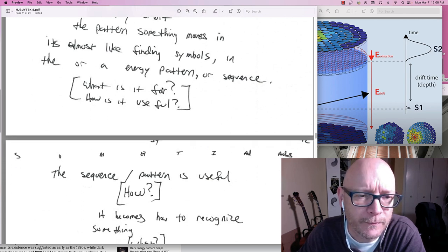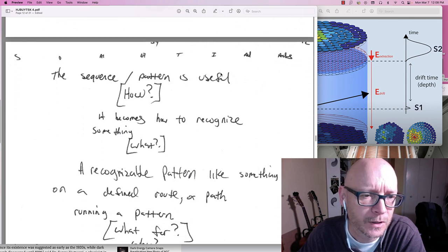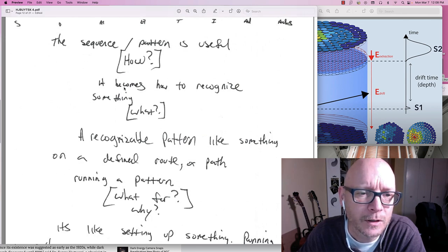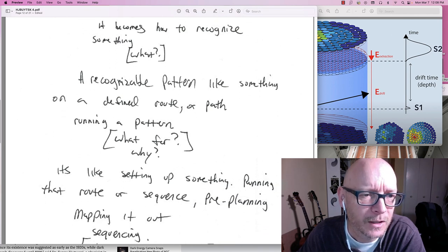But what is it for though I wonder. And how is it useful. The sequence. Slash pattern. Is useful. But how. It becomes how to. Recognize something. But what. I wonder. A recognizable pattern. Like something. On a. Defined. Route. Or path. Like through here. Running. A pattern.